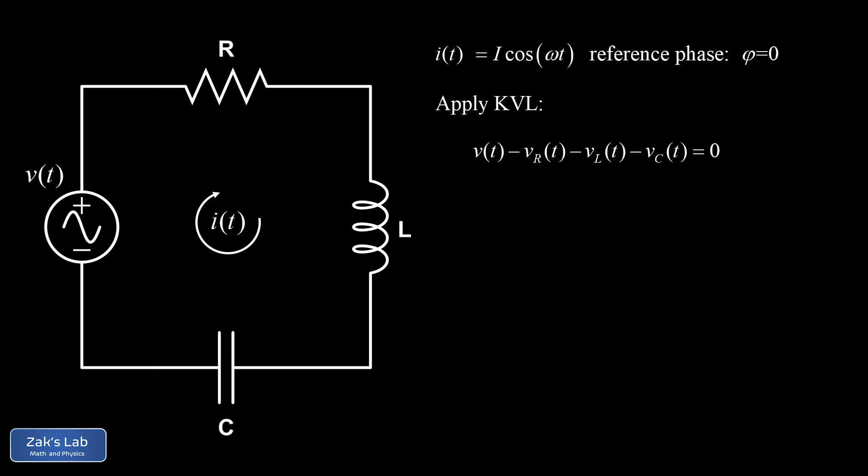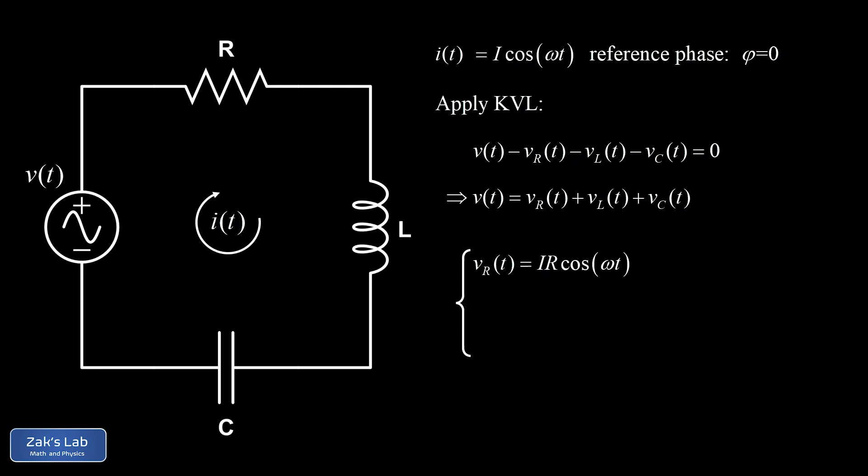Solving for v(t), the power source voltage, we get v(t) equal to the sum of voltage drops across all three circuit elements — a sum of three sinusoidal functions with different phases, worked out in the previous videos. First, the voltage across the resistor: v_R(t) = I·R·cos(ωt), which is in phase with the current.